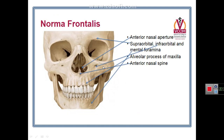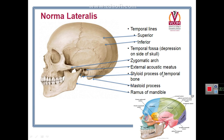This is another figure demonstrating the structures just described. Now we describe the lateral view of the skull, which is the norma lateralis. The bones forming the norma lateralis are the parietal bone, frontal bone, zygomatic bone, temporal bone, greater wing of sphenoid, mandible, and also the maxilla.